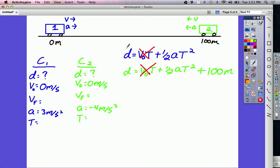So, since we know that D for car 1 and D for car 2 are equal, we can set the 1 half acceleration time squared and the 1 half acceleration time squared plus 100 equal to each other. Now, how would that look? 1 half AT squared equals 1 half AT squared plus 100.